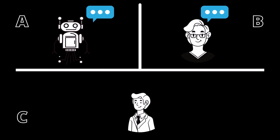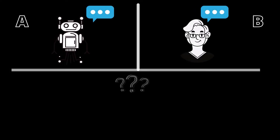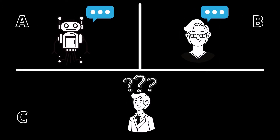The computer tries to confuse the inspector by giving answers as accurate as a human being. This is done for multiple rounds, and if the inspector cannot clearly identify whether the computer or the human gave the answer for more than half the time, the computer is said to have passed the Turing test.